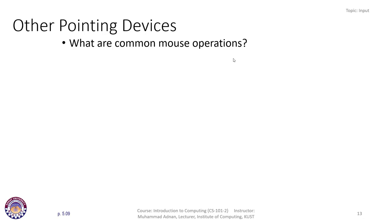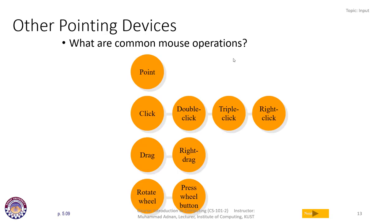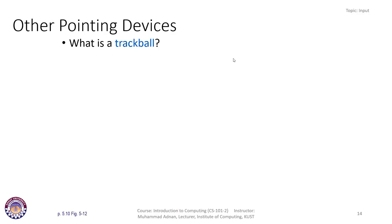Common mouse operations include: point, click, double-click, triple-click, right-click, drag, right-drag, rotate the wheel, press the wheel, left drag, right drag, and click-and-drag. These are the different operations you perform while using the mouse.